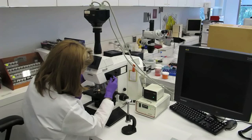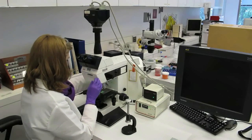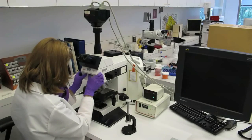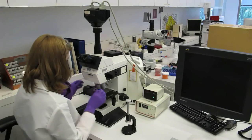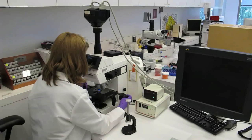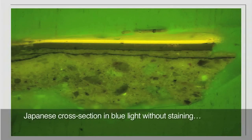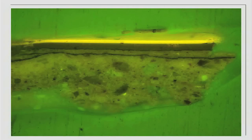As Asian lacquer coatings contain components that have a characteristic fluorescence under incident blue light, the light source and filter cubes are changed in the microscope so that the sample can be examined under fluorescent conditions. This image shows the same sample as before in blue light, where the multilayered structure of the top lacquer layers and the foundation becomes even more apparent.